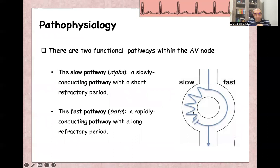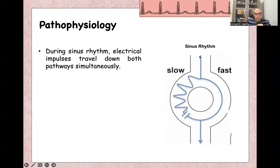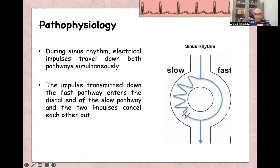So: slow pathway with short refractory period, and fast pathway with a longer refractory period. Normally during sinus rhythm, the impulse will go through both pathways simultaneously. From the SA node, one impulse will travel through both pathways together, and the impulse from the fast pathway will meet and cancel the impulse from the slow pathway at the other end.